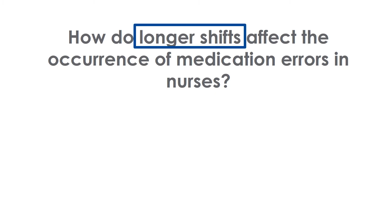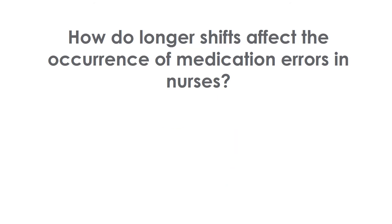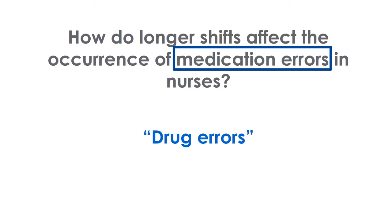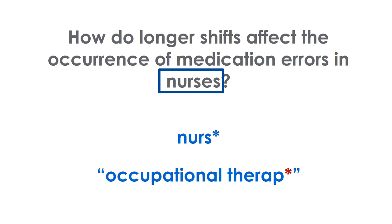The first idea is longer shifts. Some good keywords for this topic are shift length or schedule. The second idea is medication errors — that's a good keyword, but we could also try drug errors or treatment errors. The last idea is nurses. To add your area of study, enter the word minus the ending plus an asterisk. This will search for all endings of the word, like nurse, nurses, or nursing. For a two-word area of study like occupational therapy, put quotation marks around the phrase.